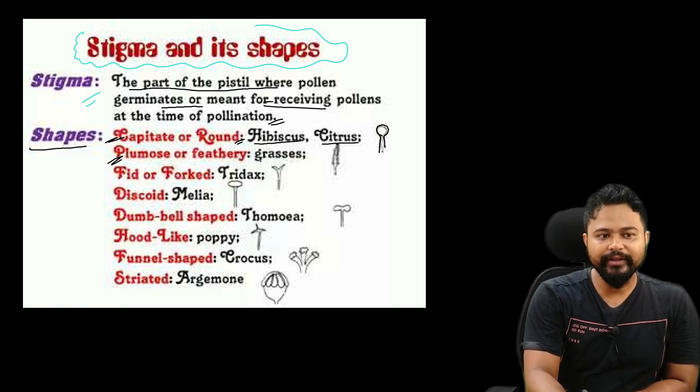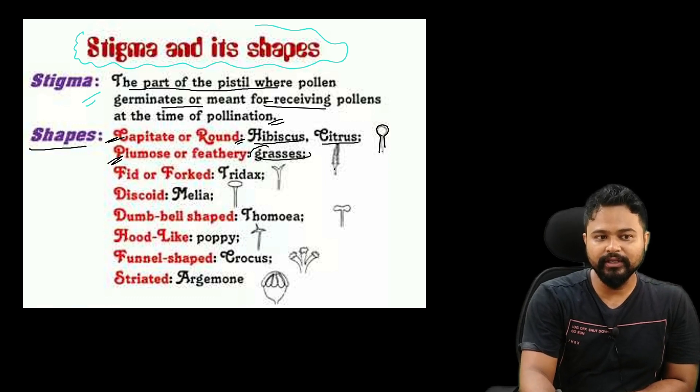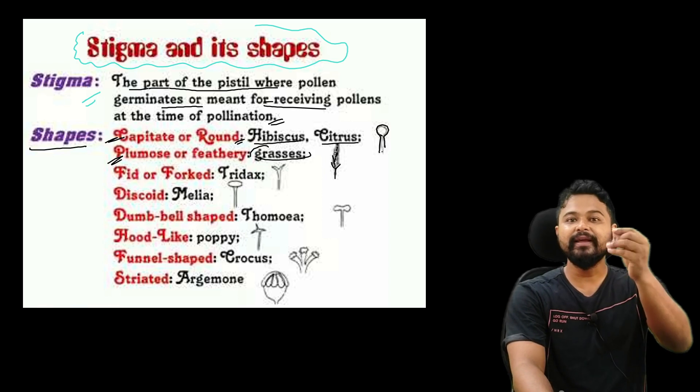Second shape: plumose or feathery. Example: Grass — the stigma is feathery. Feathery means hair-like.